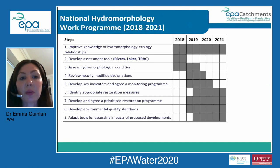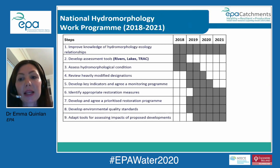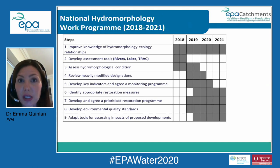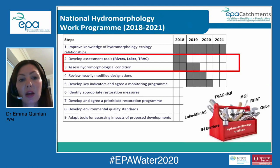The national hydromorphology work program is outlined in the River Basin Management Plan for 2018 to 2021. There are nine steps, and this plan ties in with the Department of Housing, Planning and Local Government's ultimate goal of having a statutory control regime in place to manage physical modification. The first step addresses improved knowledge of hydromorphology-ecology relationships — the quantitative link is quite weak, not just here but everywhere. Steps two and three involve developing and implementing hydromorphological condition assessment tools, which are priority steps for the EPA at the moment.